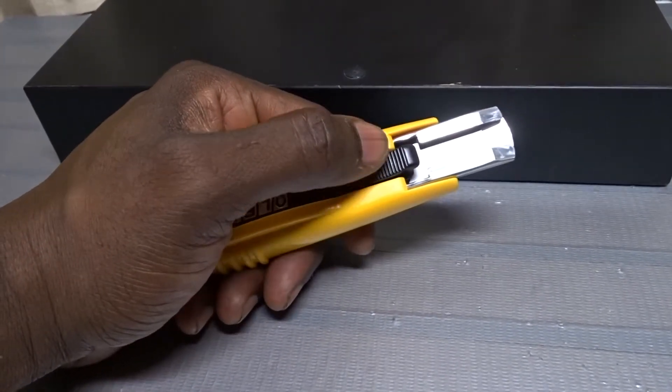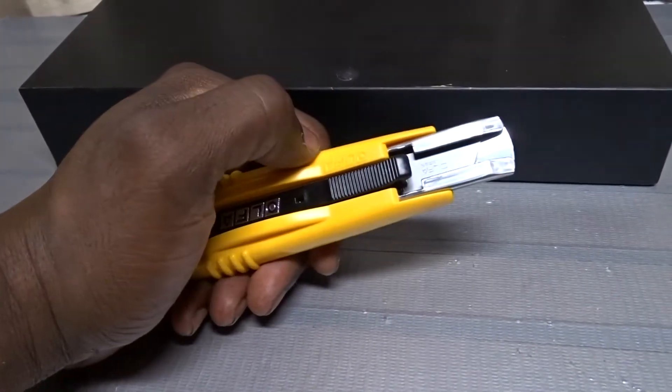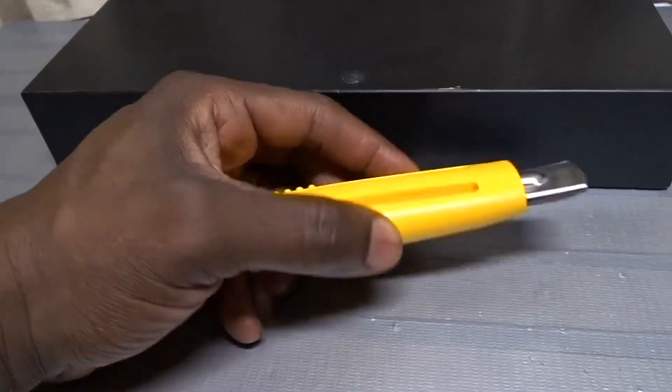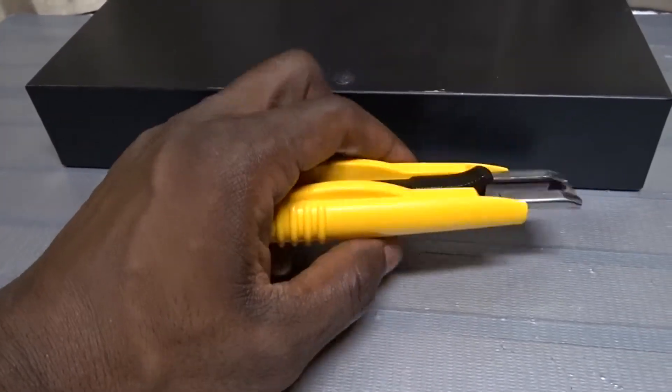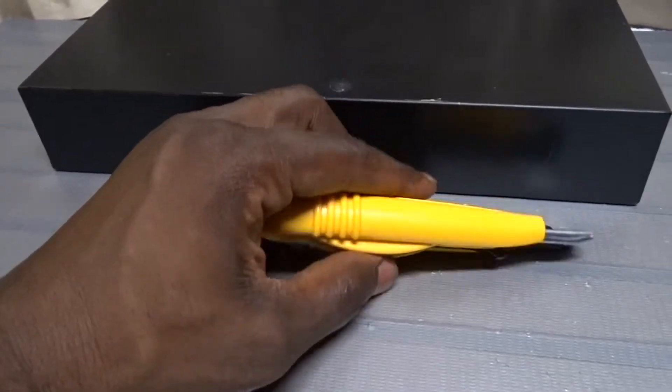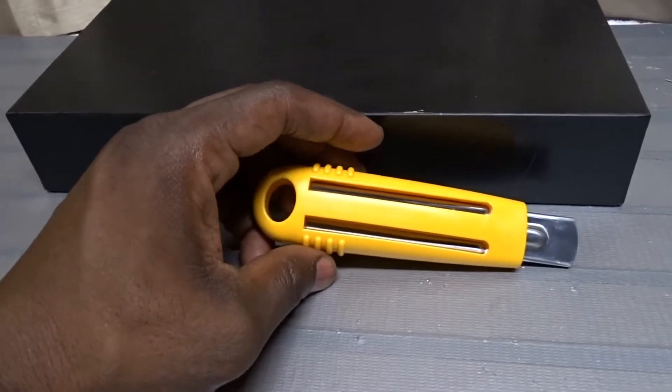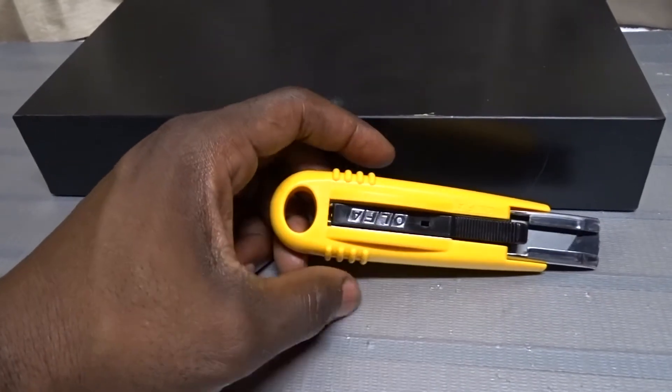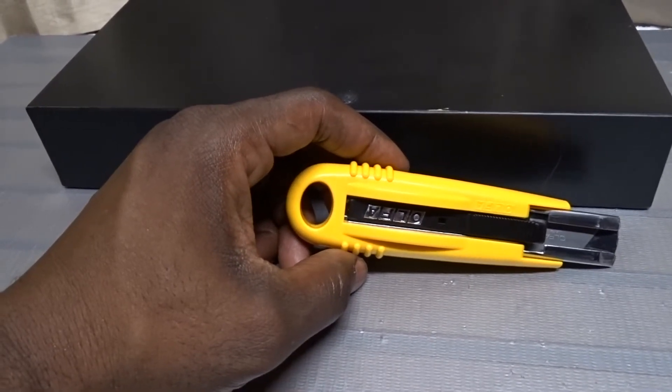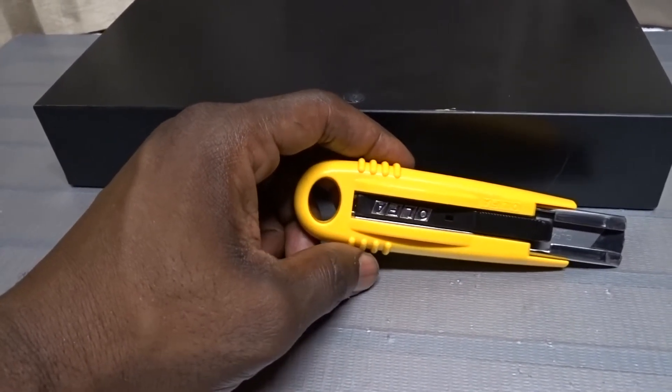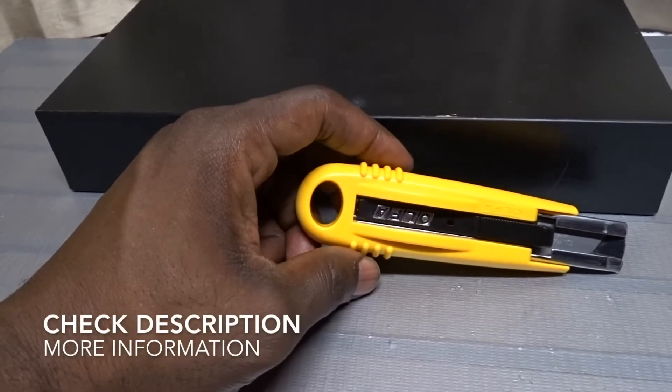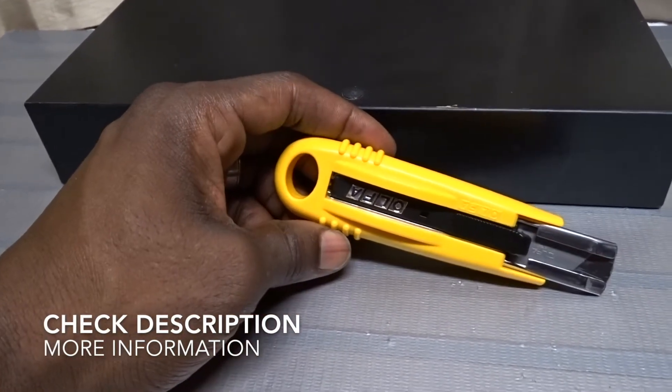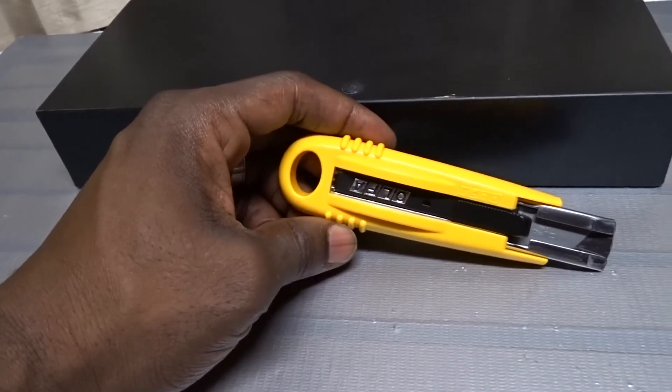But yeah, it's a good little knife to do whatever you need to do with it. I mean, if you're going to cut, it's going to cut for you. All right, we've been talking about the OLFA self-retracting safety knife, O-L-F-A. Hope you guys use this information, and I'll see you again next time. Okay, bye-bye.